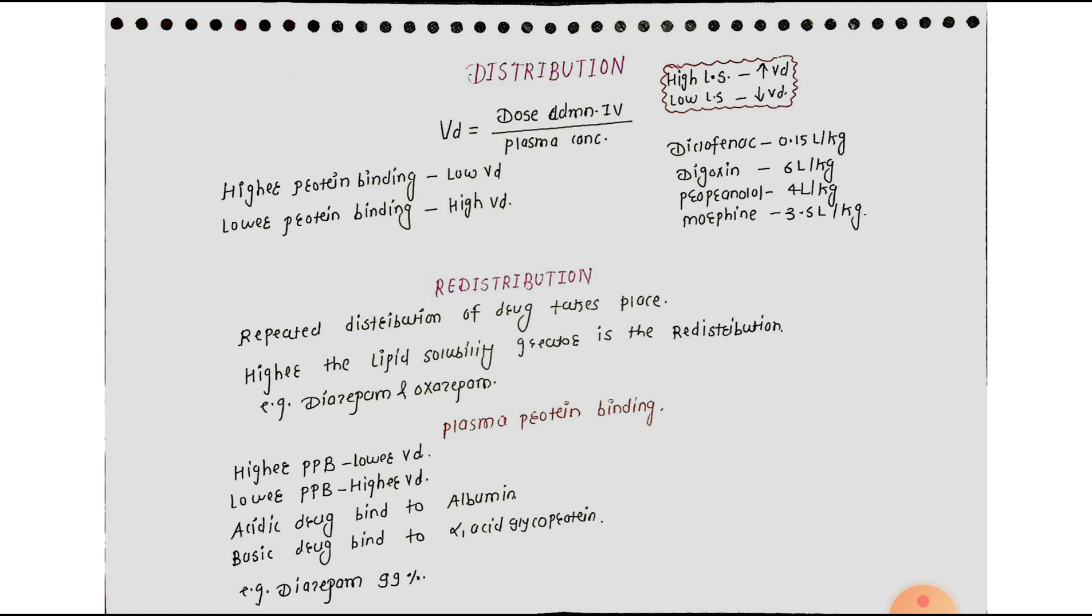Highly protein bound, that means high plasma protein binding, that means lower Volume of Distribution. And lower plasma protein binding, that means higher Volume of Distribution.